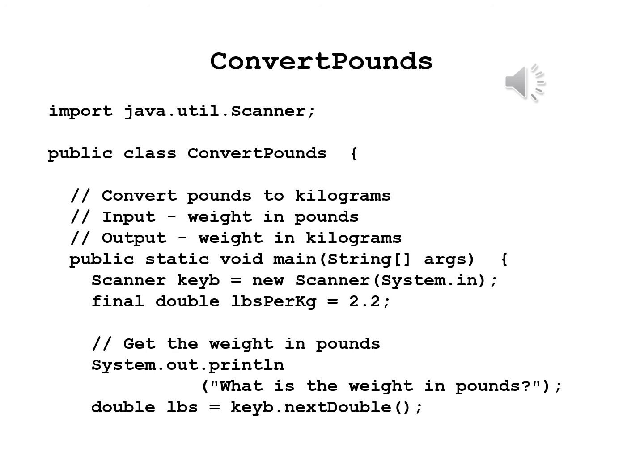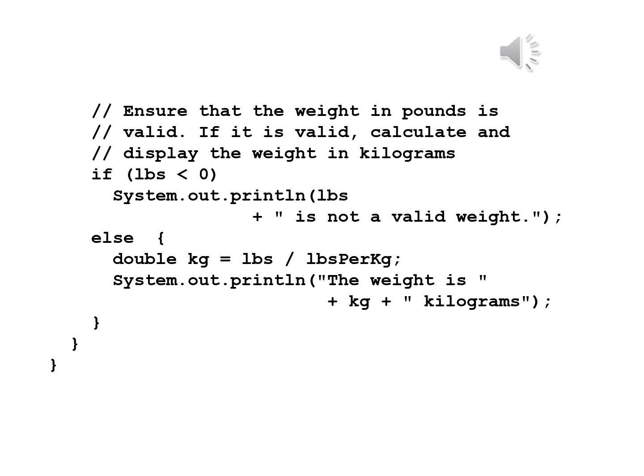We declare the keyboard Scanner: keyboard equals new Scanner(System.in) so we can get input from the keyboard. Then final double poundsPerKilogram equals 2.2. The word final in front of the declaration means the value cannot be changed, guaranteeing it will remain 2.2 throughout and making it clear why we have 2.2 in the program. We get the weight in pounds: System.out.println 'What is the weight in pounds?' then double pounds equals keyboard.nextDouble().